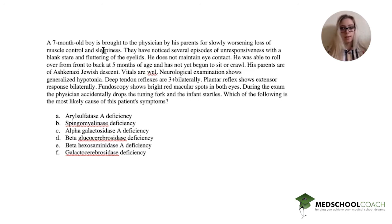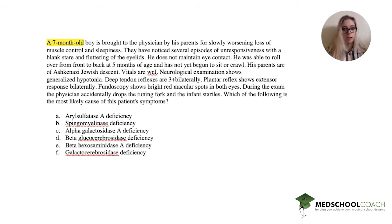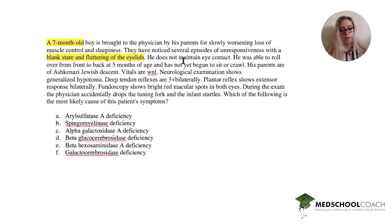Let's analyze this question. It is a seven-month-old boy. He has sleepiness and lack of muscle control. I'm going to highlight as I go. He has a blank stare and fluttering of the eyelids — for a child, this most likely means a seizure. He also doesn't maintain eye contact. He was able to roll over front to back at five months of age, so that's normal, but hasn't begun to sit or crawl yet.